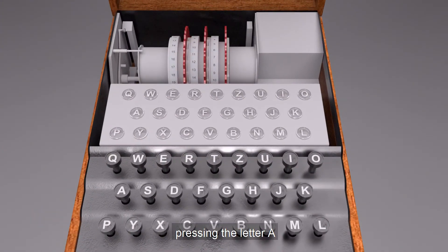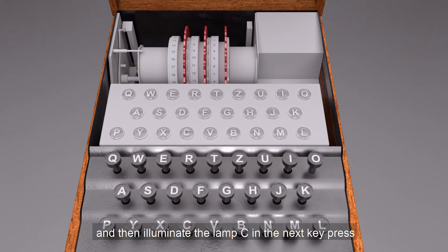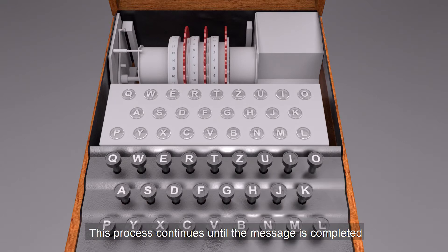For example, pressing the letter A could illuminate the lamp B in one key press, and then illuminate the lamp C in the next key press as the rotor rotates. This process continues until the message is completed.